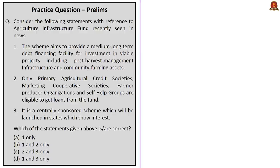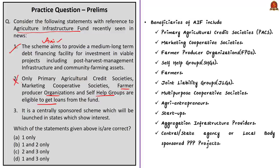Looking at the practice question on the Agriculture Infrastructure Fund: it is a three-statement question asking which statements are correct. The first statement about the aim of the scheme is correct. The second statement says only primary agricultural credit societies, marketing cooperative societies, farmer producer organizations, and self-help groups are eligible — this is incorrect, as there is a wider basket of beneficiaries. The third statement says it is a centrally sponsored scheme — this is also incorrect, as it is a central sector scheme. So the correct answer is option A — only statement 1.